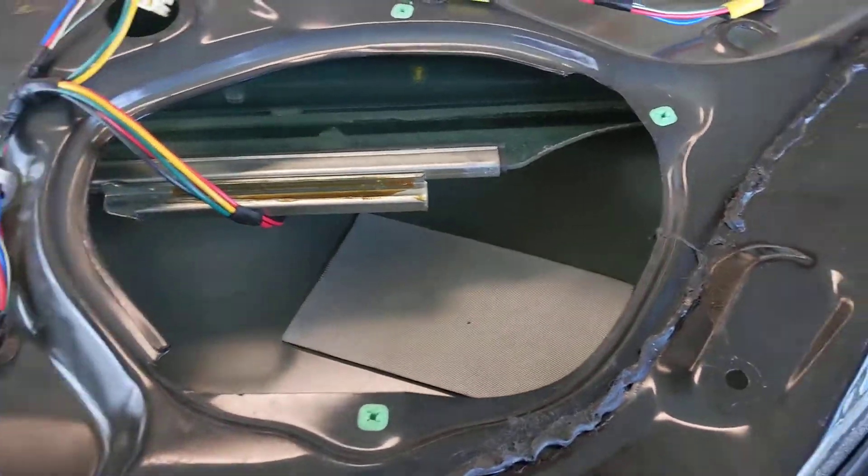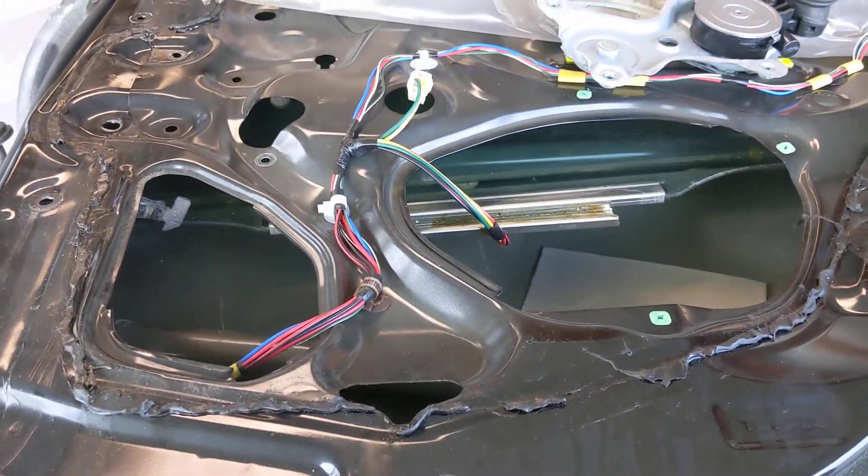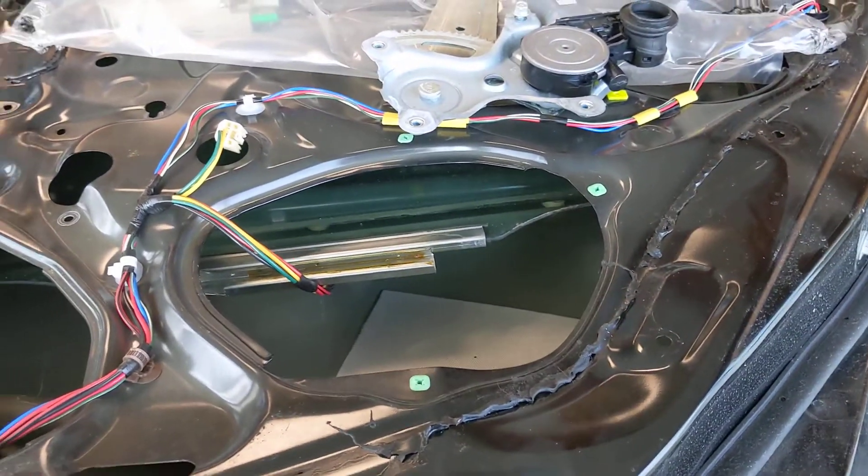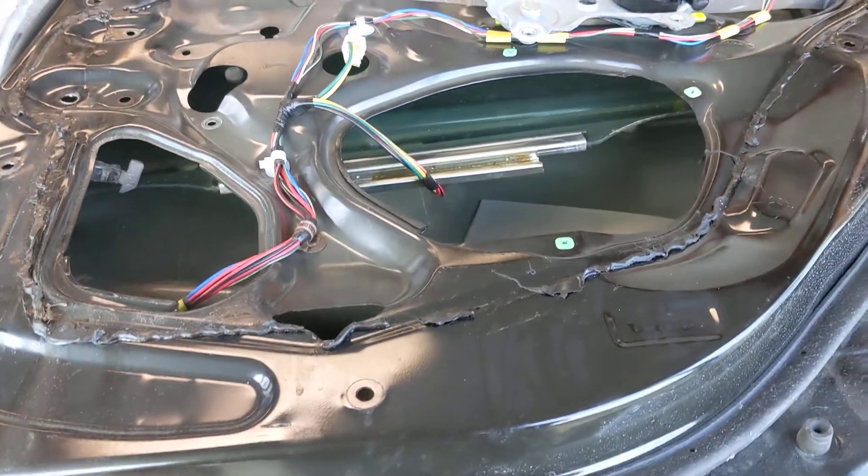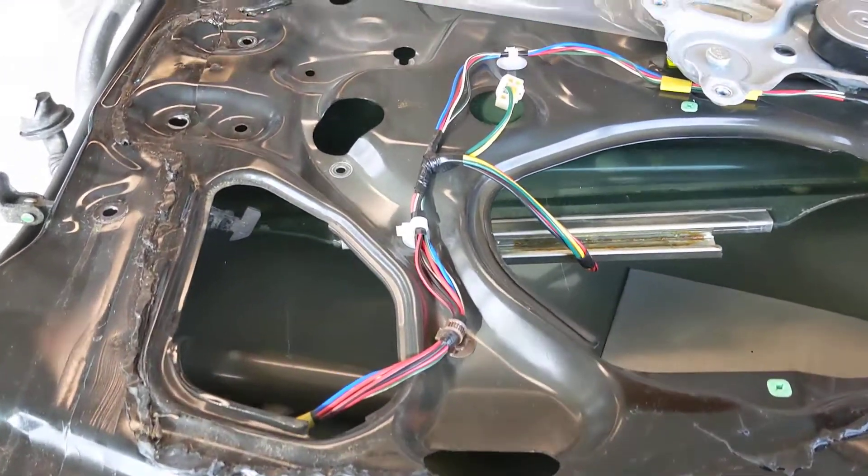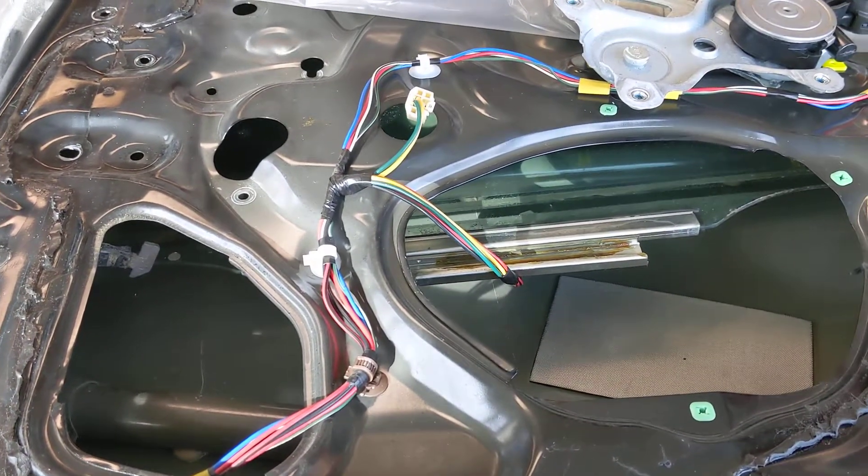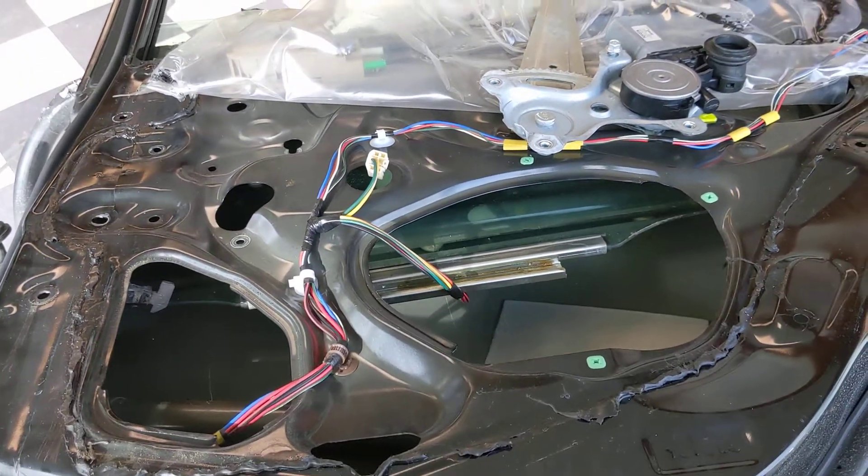So after that, that's pretty much it. That's how you remove the window regulator and motor out of a 2003 through 2008 Toyota Corolla on the rear doors. If you've got any questions at all, please just put them in the comment section down below. I'll get to them as quick as I can. And yeah, good luck on your project. Please like the video and consider subscribing to the channel. I really appreciate it. Have a great day.